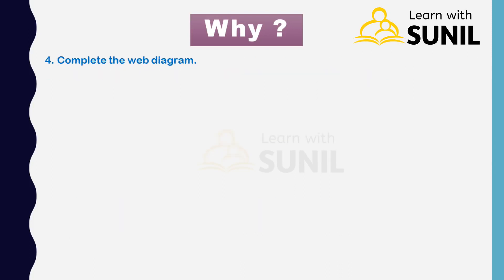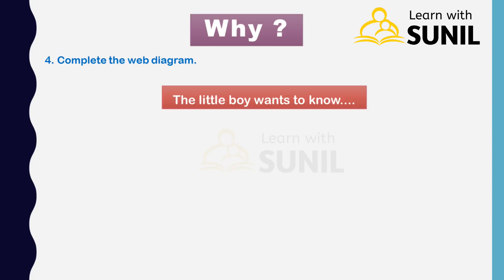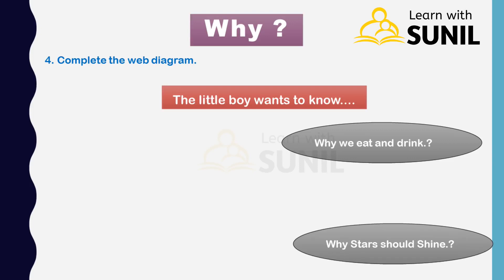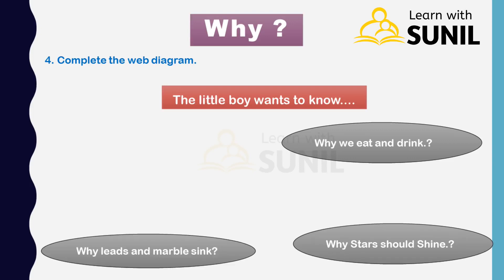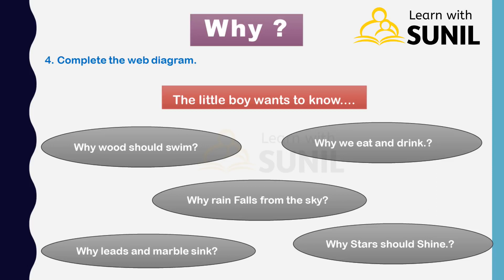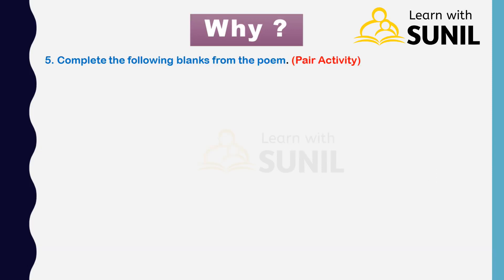Fourth question: complete the web diagram. The little boy wants to know: why we eat and drink; why stars should shine; why leaves and marbles sing; why wood should swim; why rain falls from the sky. Next question: complete the following blanks from the poem — pair activity.